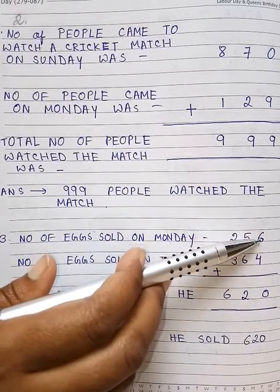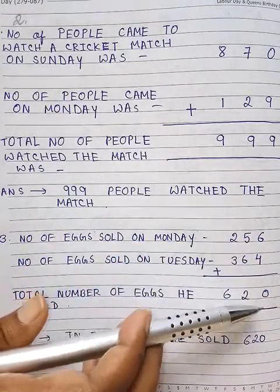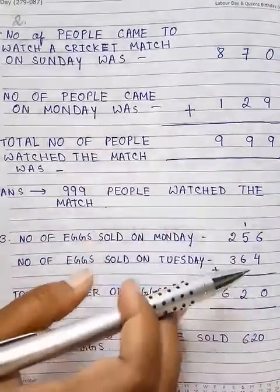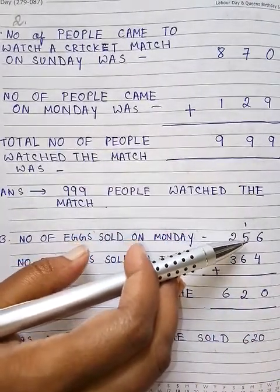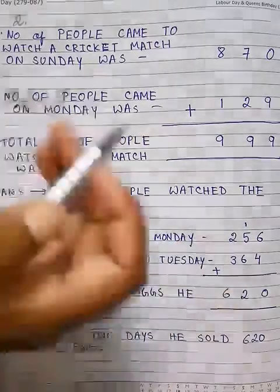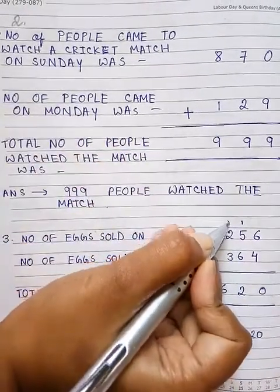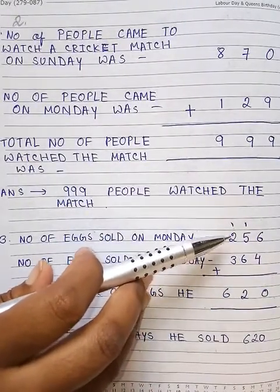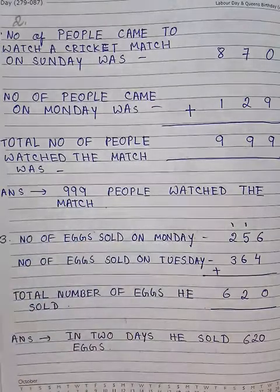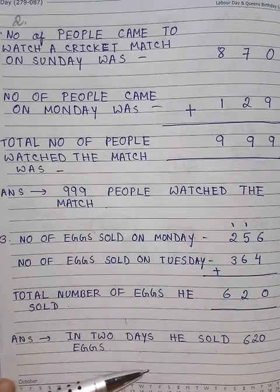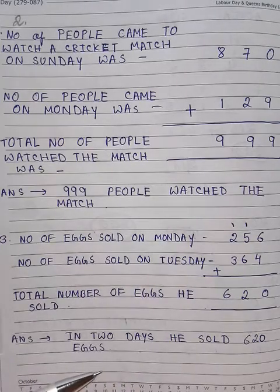4 plus 6 is 10 — write down 0 here and carry 1. Next, 6 plus 5 is 11, plus 1 carry is 12 — write down 2 and carry 1 to the hundreds place. Next, 3 plus 2 is 5, plus 1 carry is 6. After that write down the answer: in 2 days he sold 620 eggs.